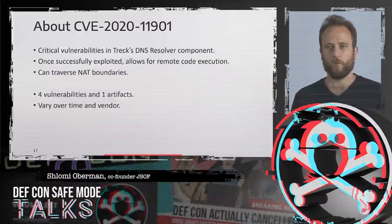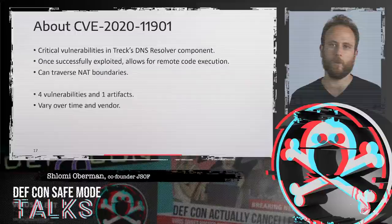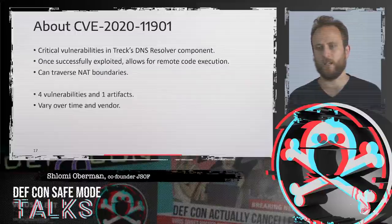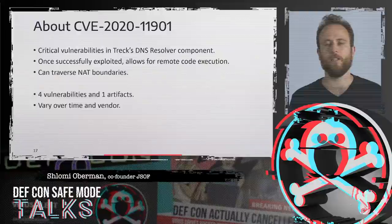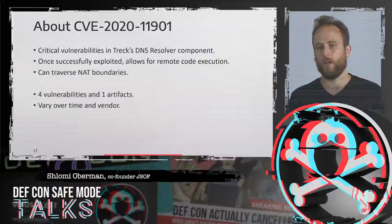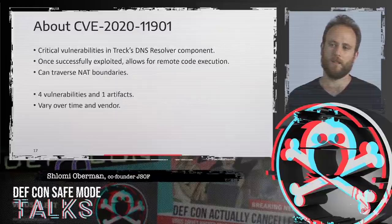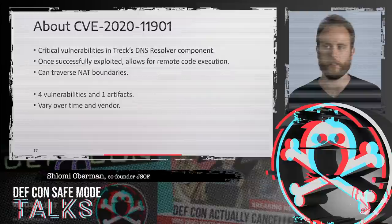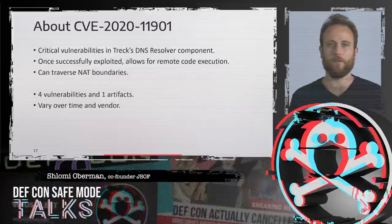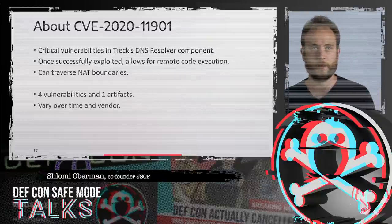Behind the scenes, four vulnerabilities — one of which we call an artifact, a bug that made it easier for us to exploit. These vulnerabilities vary over time: along the years, Trek changed the stack and the vulnerabilities changed. We see different versions of the vulnerabilities in different devices depending on when they stopped using Trek. They also change between vendor configurations.